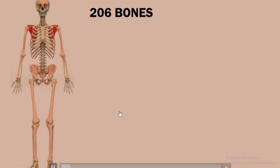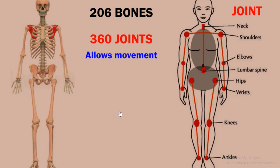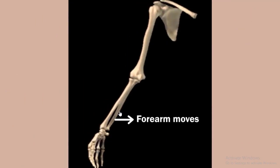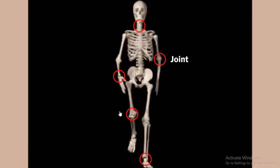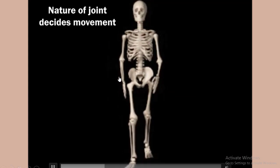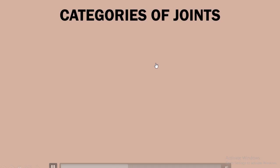Additional information about joints in the human body: the number of bones in the human body is 206 bones. A joint is the position between two bones that allows movement. The number of joints in the human body is 360 joints. Most joints allow movement of the body — such as the joint between the neck, the elbow joint, and the wrist joint.